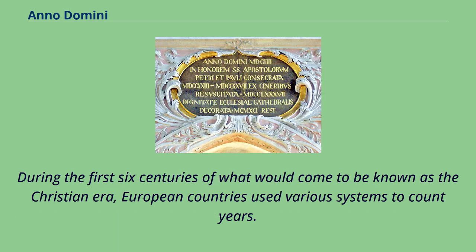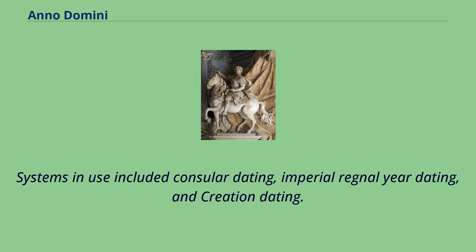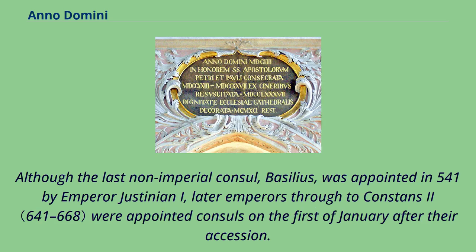During the first six centuries of what would come to be known as the Christian era, European countries used various systems to count years. Systems in use included consular dating, imperial regnal year dating, and creation dating. Although the last non-imperial consul, Basilius, was appointed in 541 by Emperor Justinian I...